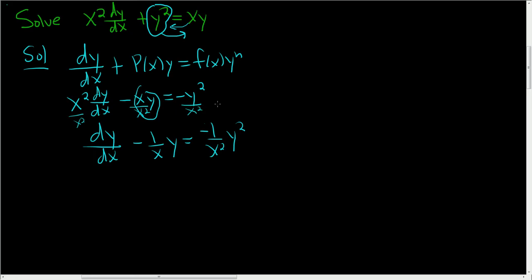It's really easy to mess up in these problems so it's not a good idea to rush it like we're doing now. Okay, the next step is to make a substitution. So here n is equal to 2. You get that from here. And the substitution is always u equals y to the 1 minus n. In this case n is 2 so you get y to the 1 minus 2. So you get y to the negative 1.